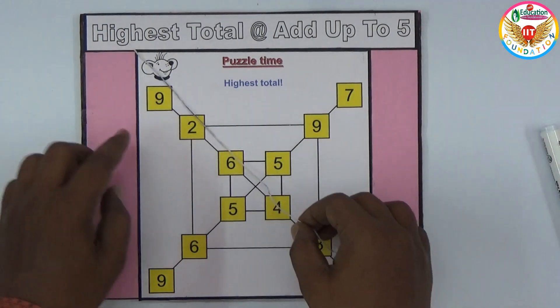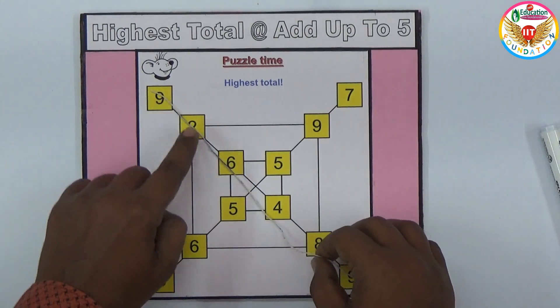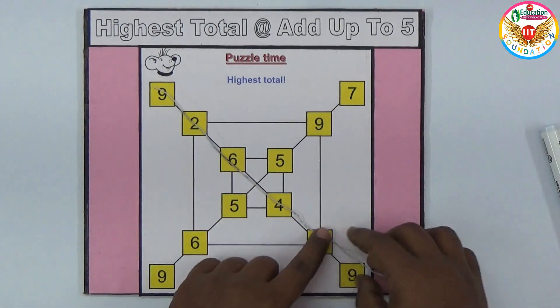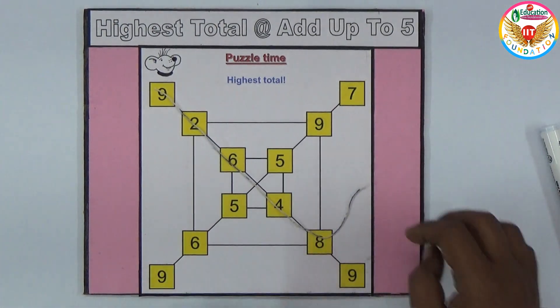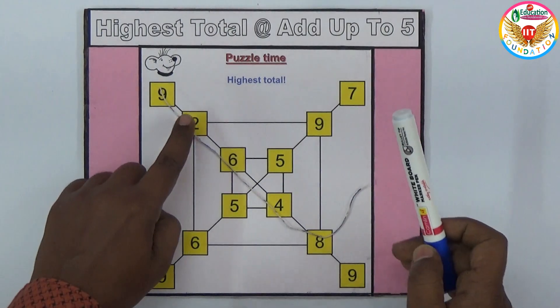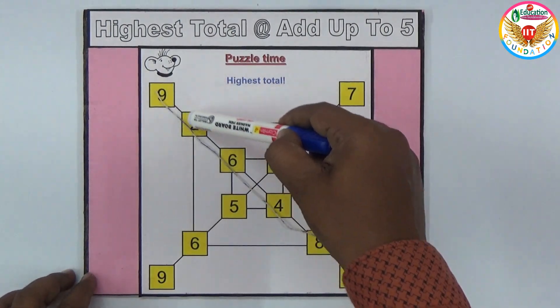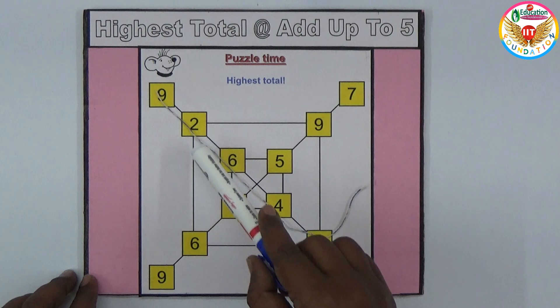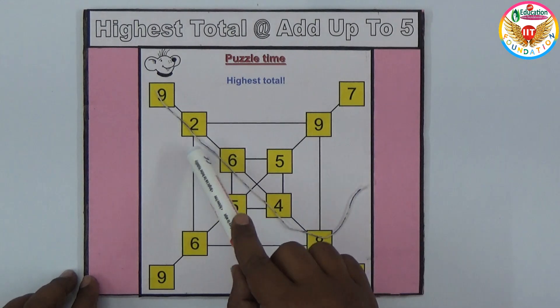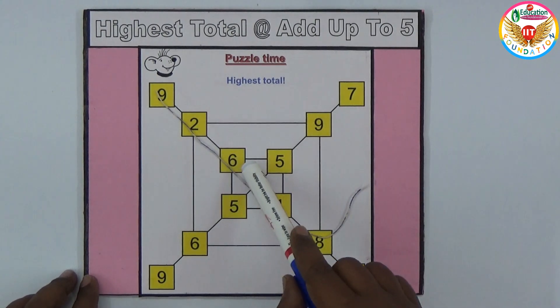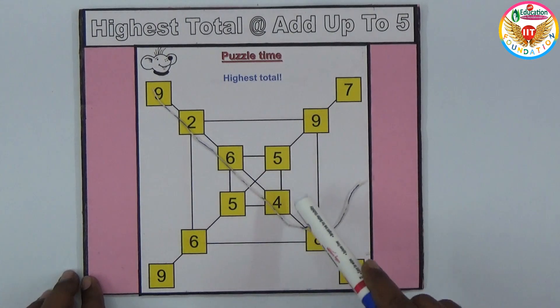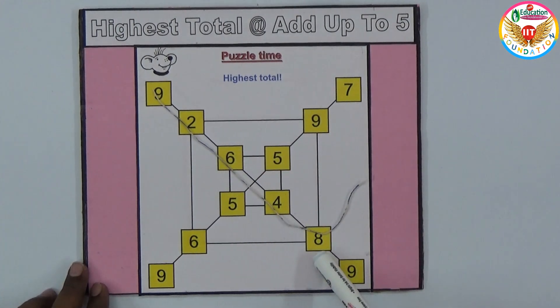For example, if I take from 9 to 2 to 6 to 4 to 8, through this line like this: 9 plus 2 is 11, 11 plus 6 is 17, 17 plus 4 is 21, 21 plus 8 is 29.